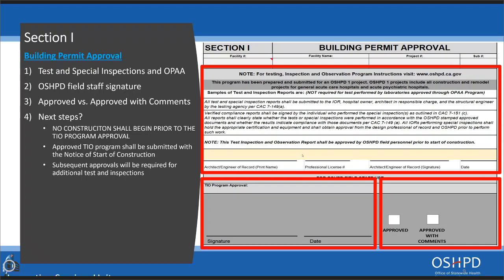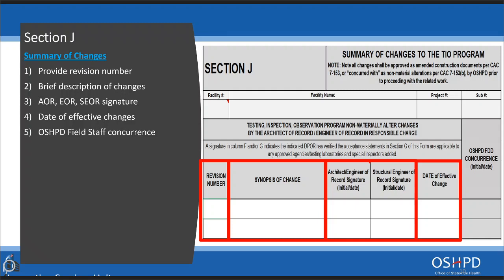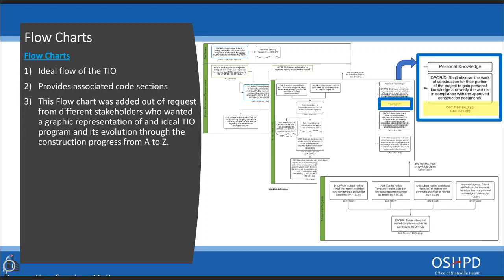Section J is the summary of changes. It provides a section for a revision number, a brief description of changes, and requires the architect of record, engineer of record, or structural engineer of record signature. It also has a box for the date of effective changes and a section for OSHPD concurrence. A new flowchart section has been added to the TIO, providing an ideal flow of the program and the associated code sections for every section, added at the request of stakeholders wanting a graphic representation.